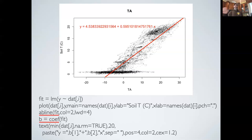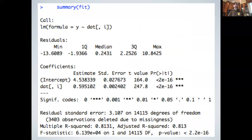In addition to adding the line to the plot, one of the other things we want to do with statistical models is look at the actual numbers coming out of them — the statistics underlying the model. A handy function for that is the summary function. If you give summary a regression object, it gives you important summary statistics about that regression. I'm going to walk through this in detail because you're going to see a lot of these.